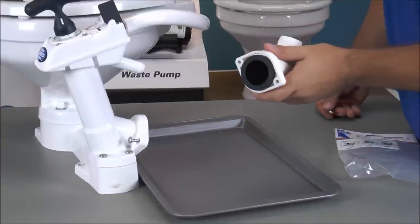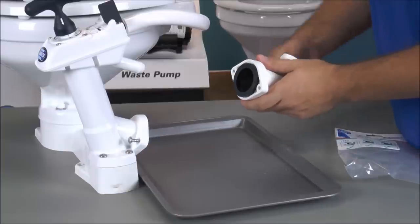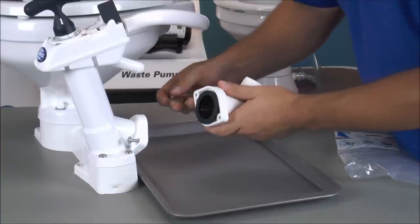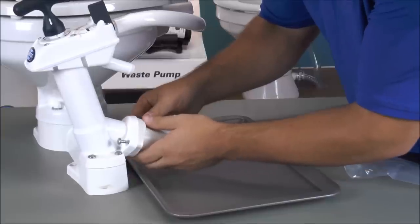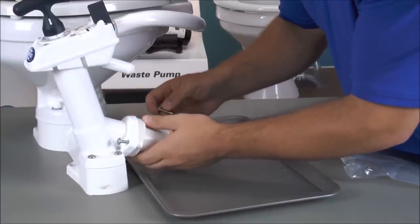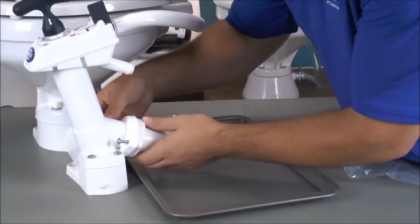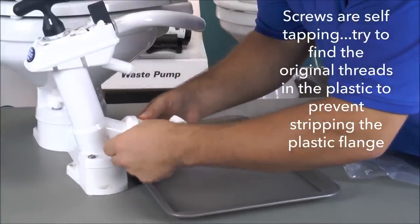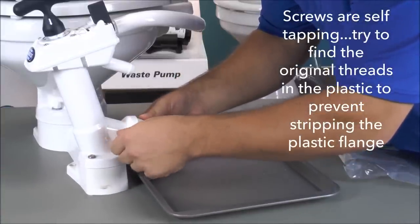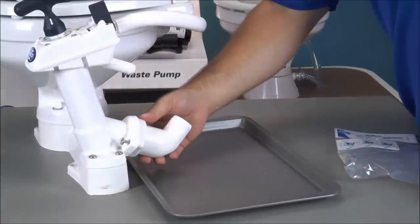Now that we have the new joker valve installed, we're going to line up the discharge flange with the pump assembly. Once you feel those two mate, you simply reinsert the screws, hand tighten them, and then finish the job with a flathead screwdriver.